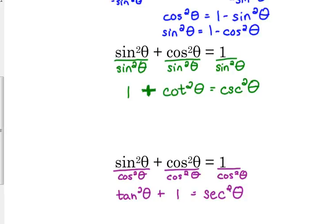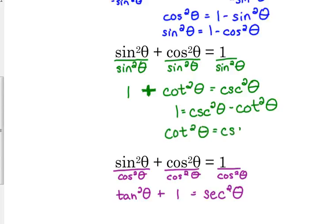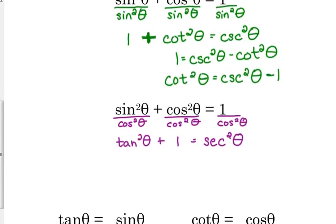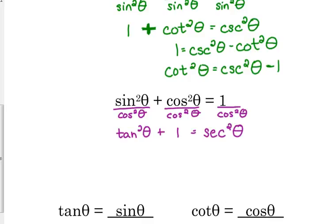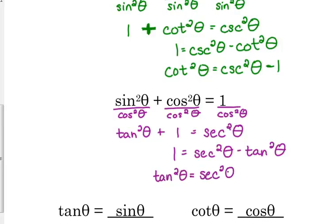With the cotangent and cosecant identity, if I subtract cotangent squared, I get cosecant squared of theta minus cotangent squared of theta equals one. Or if I subtract the one, I get cotangent squared of theta equals cosecant squared of theta minus one. And I can do the same manipulations for the tangent and secant identity — either subtract the one or subtract the tangent squared. And there are the nine versions of the Pythagorean identities.